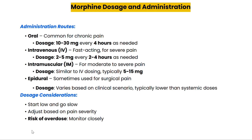For patients who require IV administration, the initial dose is usually around 2 to 5 mg every two to four hours as needed, but it can be titrated to achieve pain control. It's crucial to remember that patients with opioid tolerance, such as those who have been using opioids long-term, may require significantly higher doses.